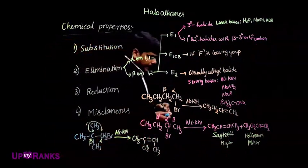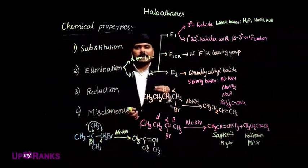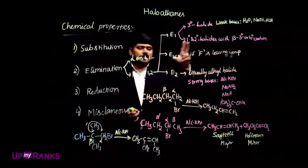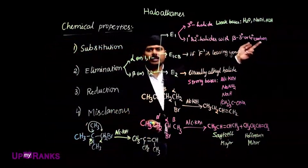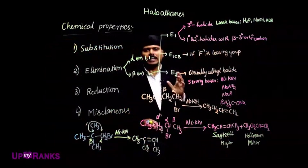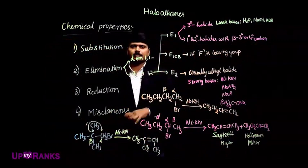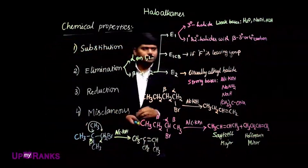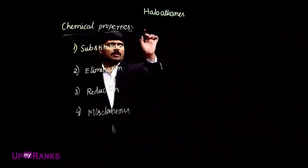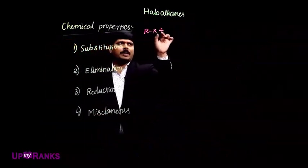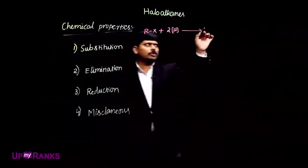We always have to check whether rearrangement possibility exists for a particular alkyl halide. The conditions are: tertiary halide, or primary and secondary halide with beta tertiary or quaternary carbon — only then we can have rearrangement. Otherwise it will go E2 elimination with no rearrangement. Next, coming to reduction reactions: RX plus nascent hydrogen gives the reduced product.